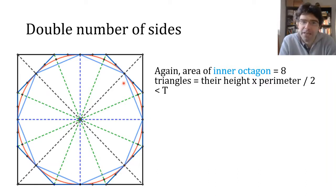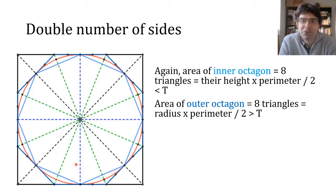So again the inner octagon, the eight triangles between the blue and black diameters, have area less than T, while the outer octagon, the eight triangles between the green diameters, is going to be more than T.